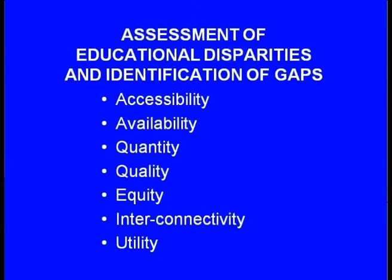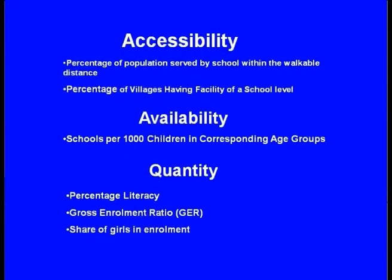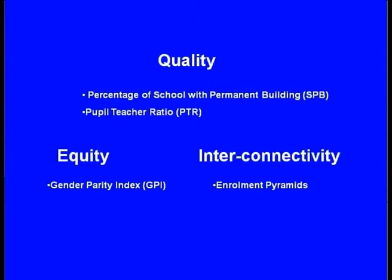These parameters — accessibility, availability, and others — are taken into consideration. Criteria include the percentage of population served by a school within walking distance and the percentage of villages having a school facility, defining accessibility. Availability is defined as schools per 1,000 children in the corresponding age group. Quantity covers percentage literacy, gross enrollment ratio, and share of girls in enrollment. Quality takes into consideration the percentage of schools with permanent buildings and pupil-to-teacher ratio. Equity considers the gender parity index, and interconnectivity takes into account enrollment pyramids.